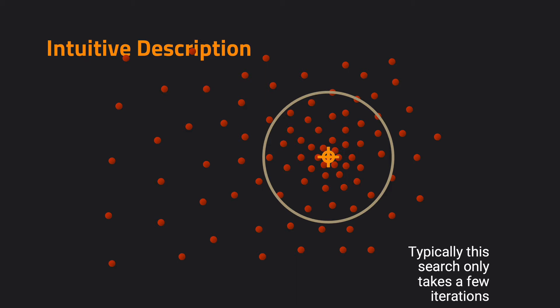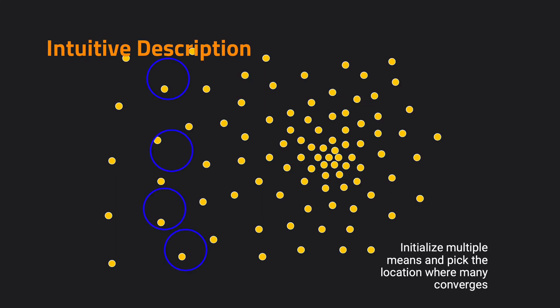Typically, this search only takes a few iterations, especially when we are shooting a high-frame-rate video and the movement of the object is not very large. If there will be a significant change and we want a higher chance of finding the mode of this distribution, we can initialize our region of interest multiple times within the whole distribution, and then pick the location where many of the circles converge to.